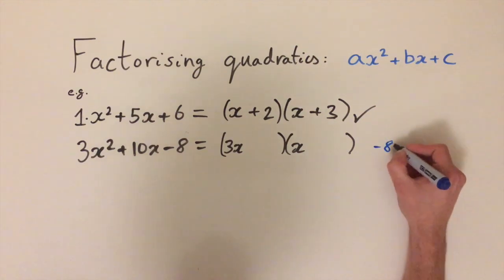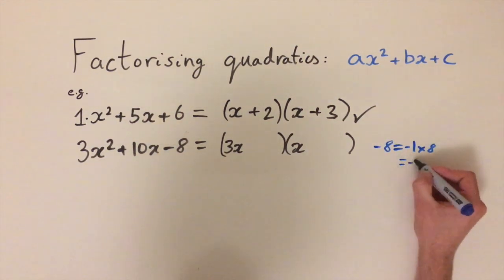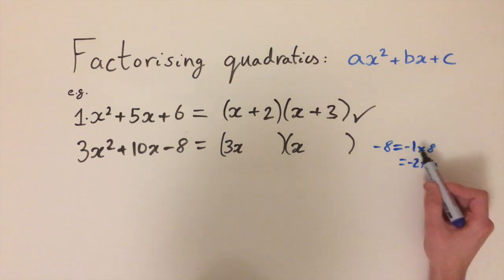We can write minus 8 as minus 1 times 8 or minus 2 times 4, or we can do 2 times minus 4 if we just move the minus sign, and we can have 1 times minus 8. So these are the only two combinations up to swapping the minus sign.